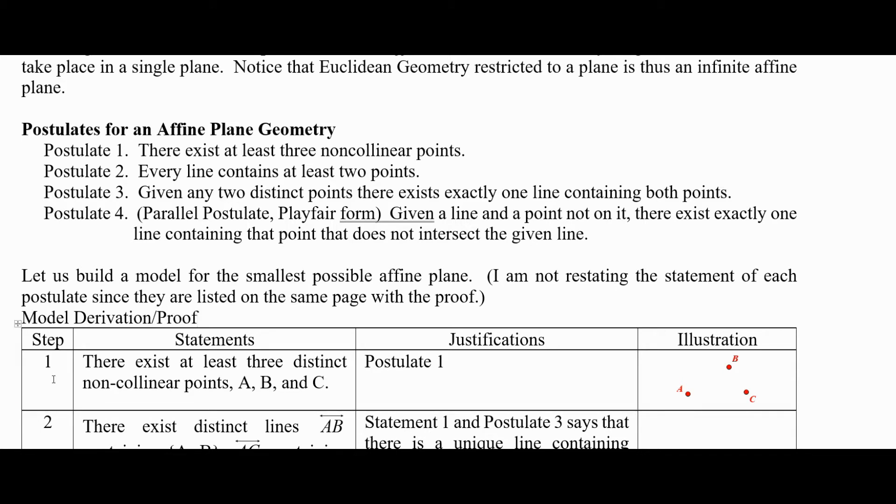Step one: There exist at least three distinct non-collinear points A, B, and C. That's Postulate 1, which is our existence postulate. All the other ones are if-then statements or could be rewritten that way. Our illustration so far is points A, B, and C.